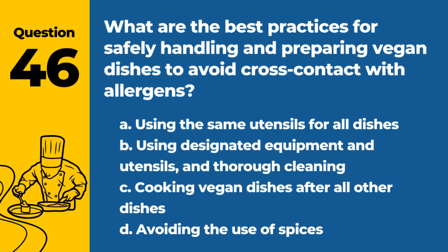Question 46. What are the best practices for safely handling and preparing vegan dishes to avoid cross-contact with allergens? A. Using the same utensils for all dishes. B. Using designated equipment and utensils and thorough cleaning. C. Cooking vegan dishes after all other dishes. D. Avoiding the use of spices. Answer: B. Using designated equipment and utensils and thorough cleaning. To avoid cross-contact with allergens when preparing vegan dishes, it is best to use designated equipment and utensils and ensure thorough cleaning.